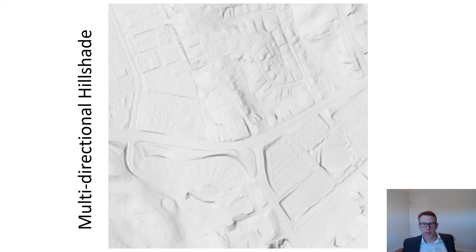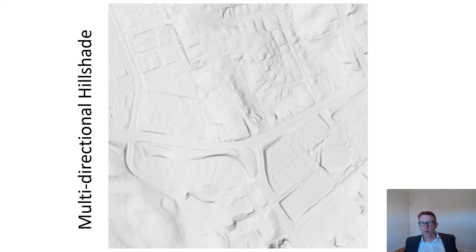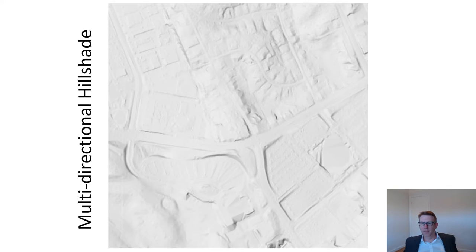One thing you can do is apply a multi-directional hillshade. This is a really nice way — probably better than the standard hillshade for reasons we talked about already. One of those being that it tends to represent the shading more evenly. Whereas a hillshade, since it's illuminated only from a single point source, it can sometimes be difficult to tell what's a ridge and what's a valley. That's generally clearer in a multi-directional hillshade. The other nice thing is that it has a white background, so if you're going to overlay things on top of it, that's quite a bit nicer.